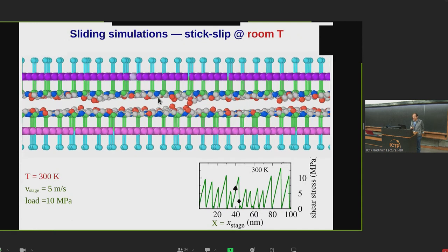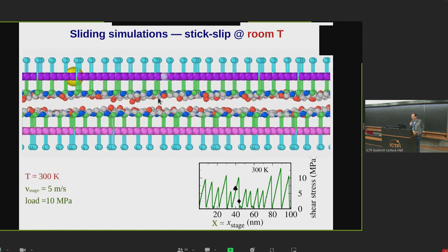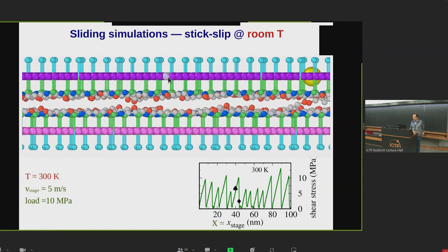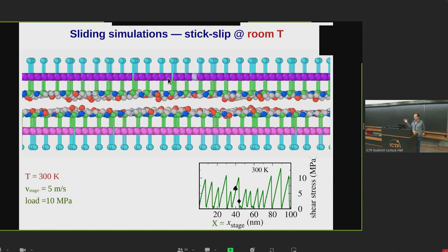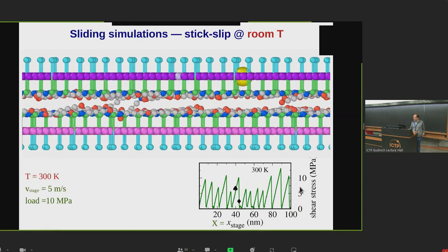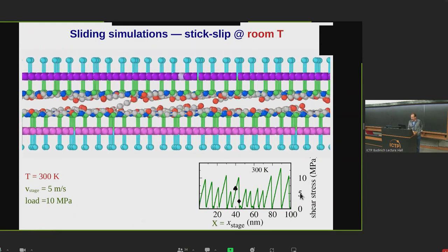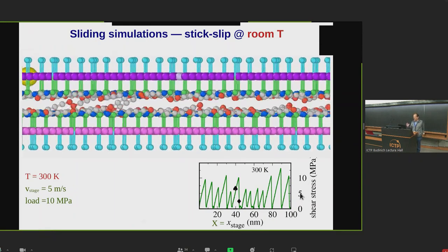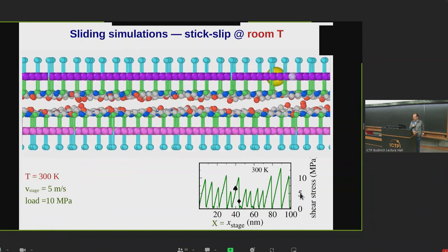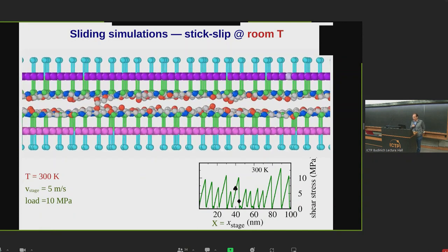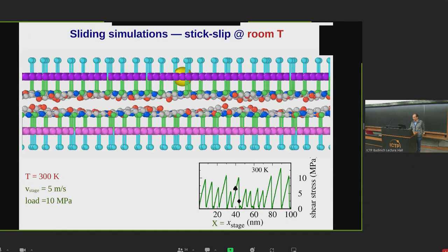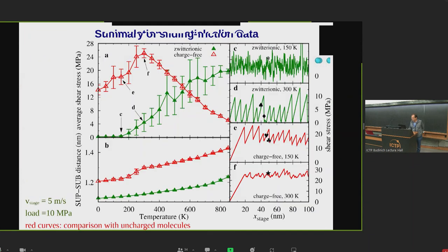Instead, if we redo the same simulation at 300 K, the situation is quite different. You see that we have stick-slip. Now it's sticking, and at a certain point it gives away and slips forward. This is the force trace. The friction is much bigger, and you see that increasing temperature, we find the situation where we promote stick-slip from smooth sliding, low friction at the low temperature. So we have this reversed friction behavior compared to the standard wisdom.